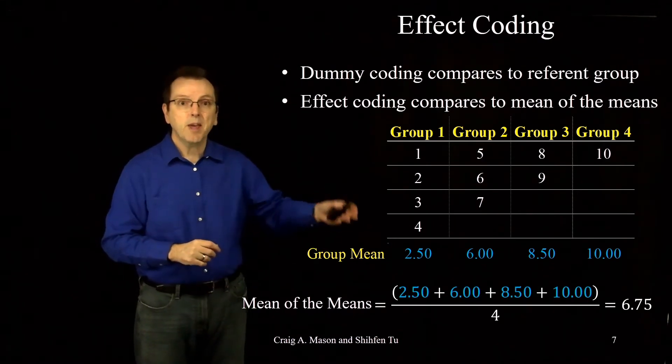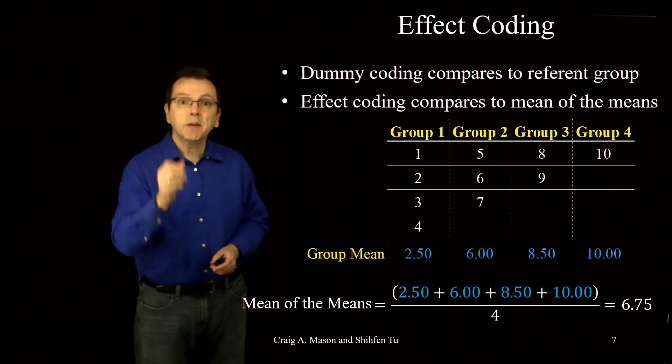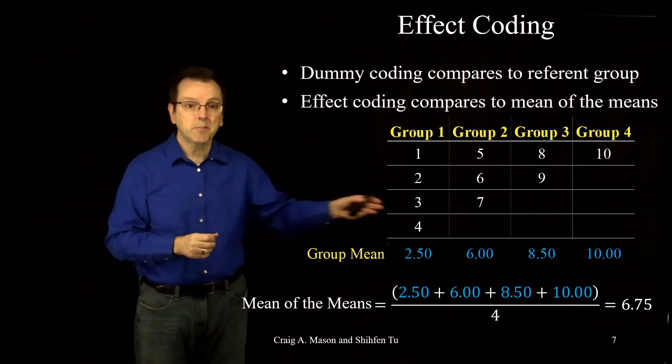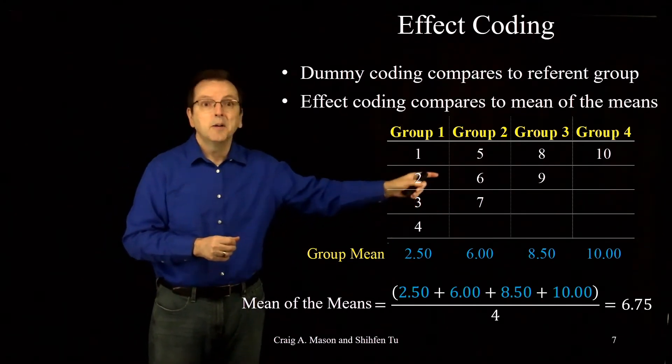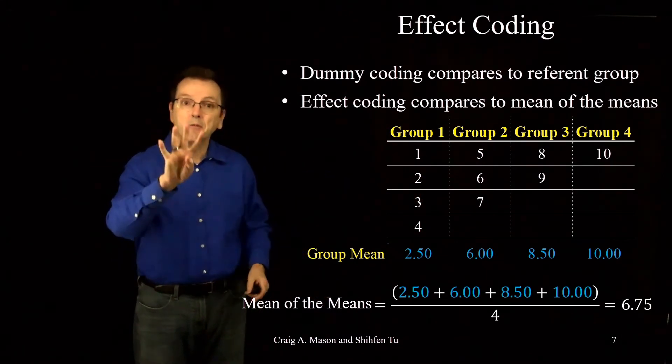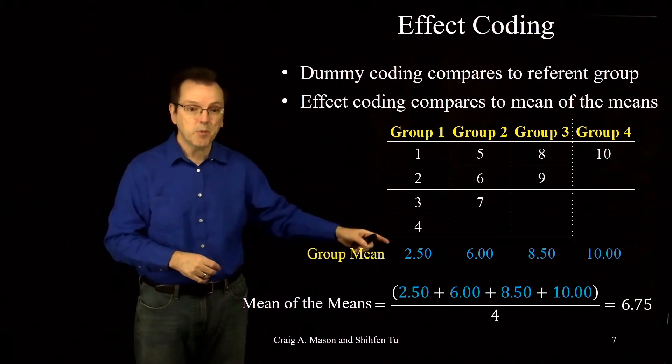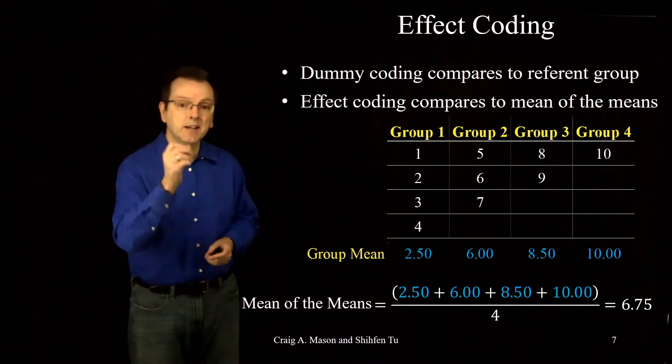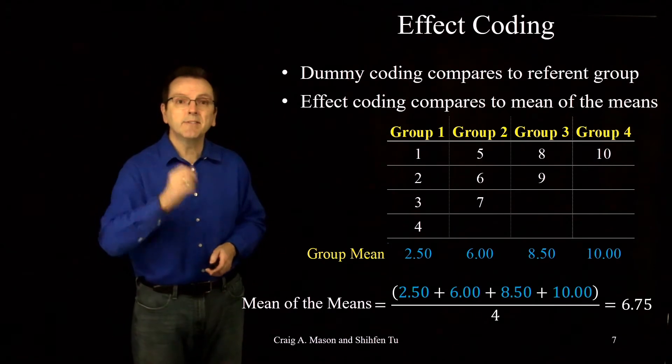In this case, we have four groups. So the mean of the means is the mean for group 1 plus the mean for group 2 plus the mean for group 3 plus the mean for group 4 all divided by 4, or 2.5 plus 6 plus 8.5 plus 10 divided by 4, which gives us a mean of the means equal to 6.75.